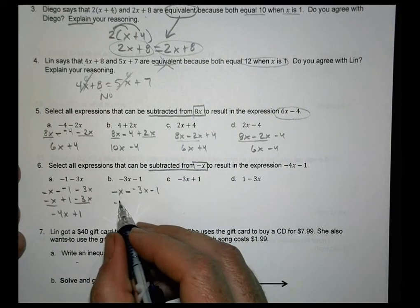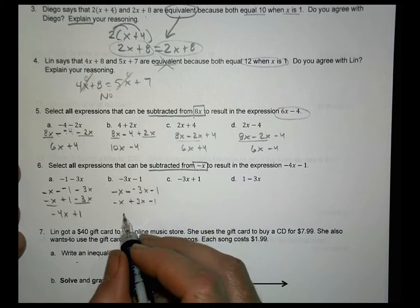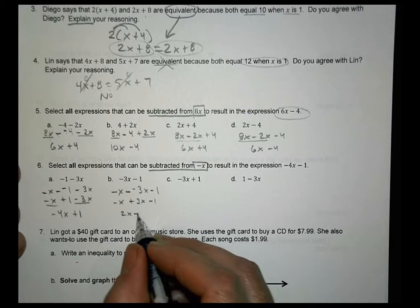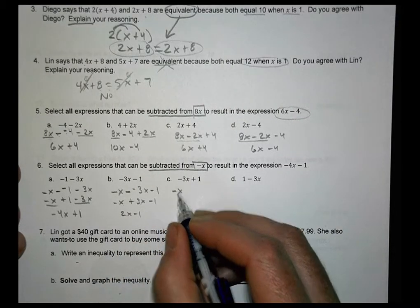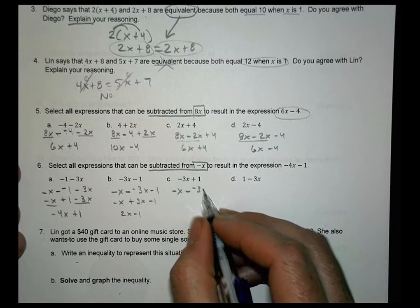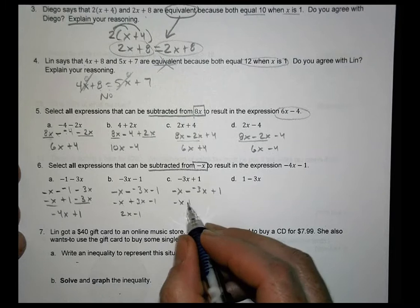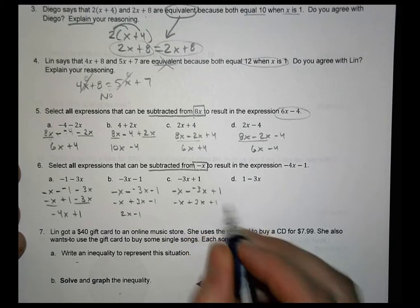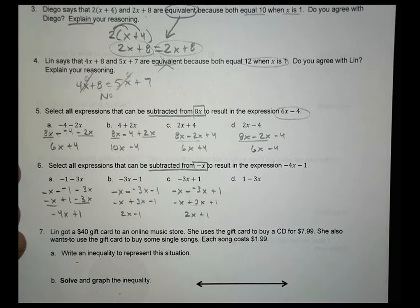This is rewritten as negative x plus 3x minus 1. 3 minus 1 becomes 2x minus 1. Not going to work. Then we have negative x minus a negative 3x plus 1. So this becomes negative x plus 3x plus 1. That joins together to become regular 2x plus 1. Not going to work.